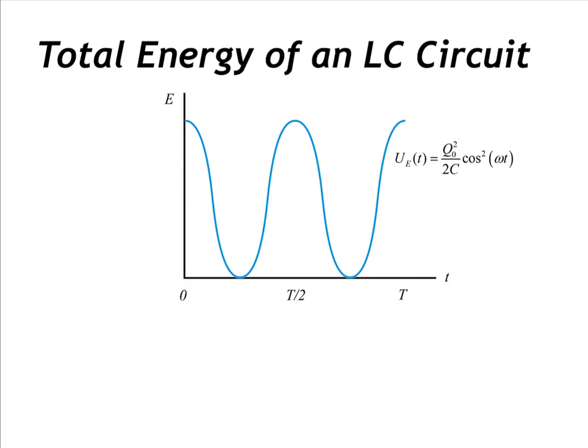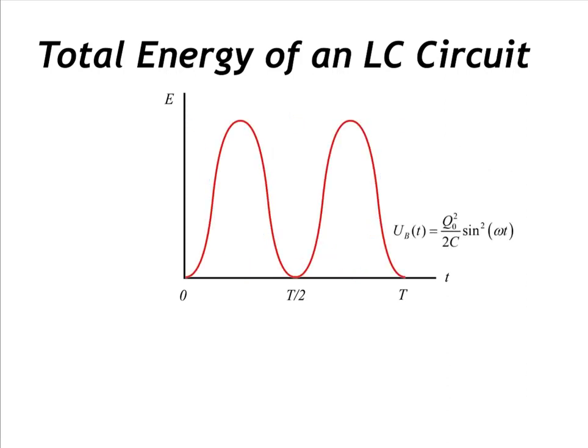Let's look at this relationship graphically. Here we have an energy versus time diagram showing the electric potential energy stored by the electric field between the plates of our capacitor. Notice how this potential energy varies periodically, reaching a maximum value. The magnetic potential energy starts off at zero since there is initially zero current, but it increases to a maximum amount, then decreases back to zero, varying periodically forever.